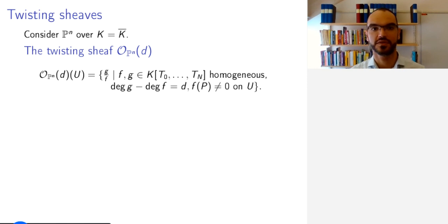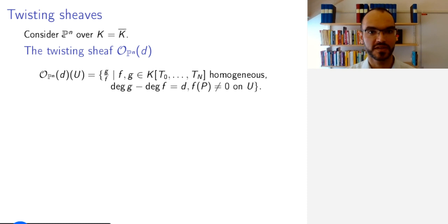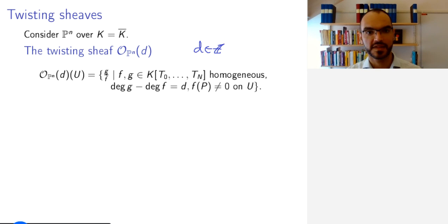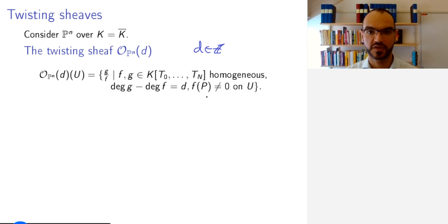Let's look at a concrete example of a sheave of modules: the twisting sheave. We are looking at projective N-space over an algebraically closed field, and we take D an integer. We define the sheave O(P^N)(D) as follows: its sections at an open set U of projective N-space is the set of all quotients G/F of homogeneous polynomials whose degree difference is exactly D. We also require that the denominator is non-vanishing on U so that the quotient makes sense.